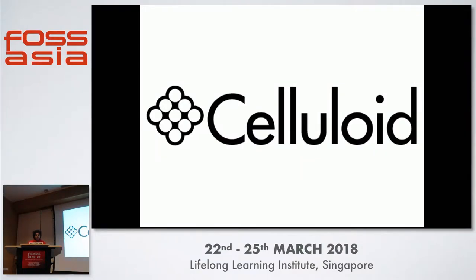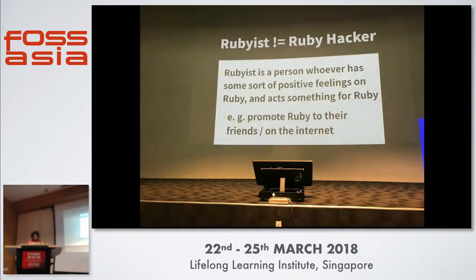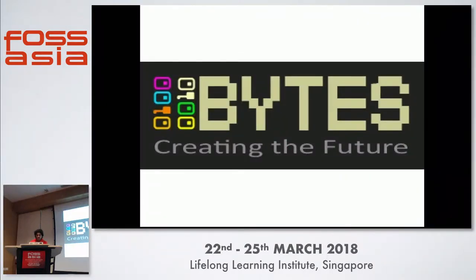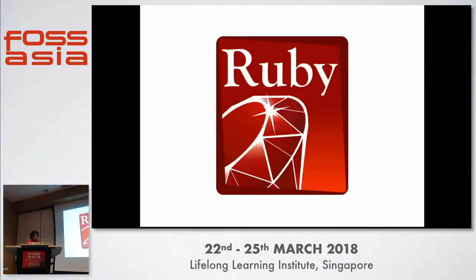I'm a core team member of Celluloid. If you haven't heard about it, Celluloid is a concurrency and parallel processing gem in Ruby, working with the Ruby foundation. I go around Asia talking about concurrency and parallel processing. According to the Ruby foundation's definition, I'm a Rubyist. Here in Singapore I'm working at a startup called bbytes, mainly doing Ruby backend development and APIs.